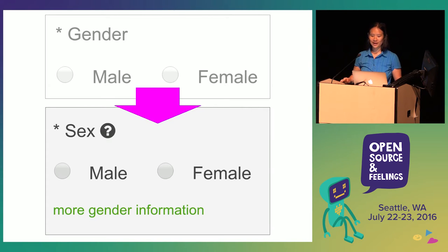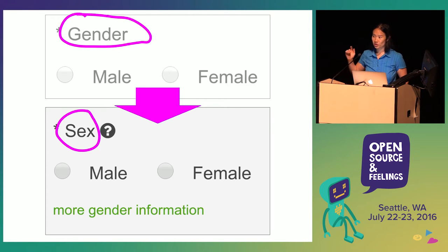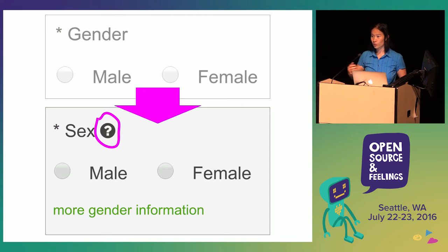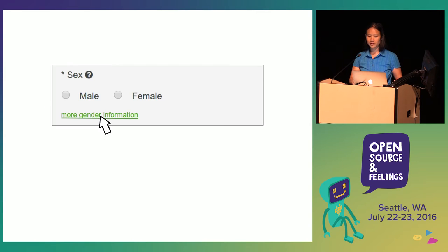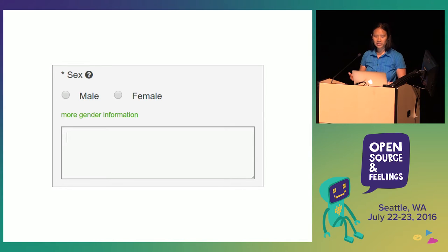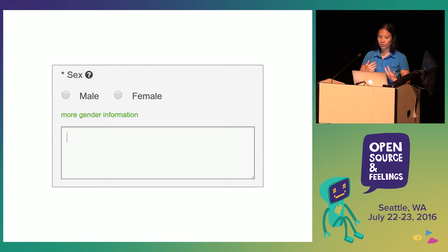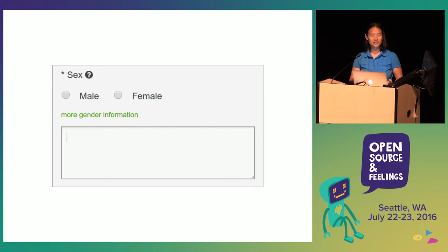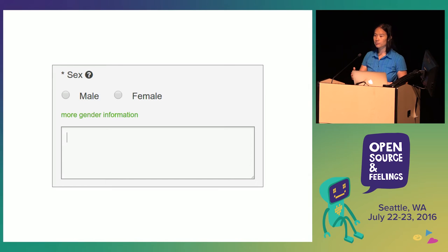So this is what we decided to do as a first pass that we could accomplish in a single-day hackathon. First, we change the label from 'gender' to 'sex' because it's a slightly more accurate description of what we're looking for. We add some hover helper text that explains what this required field is, and in that hover text we point users to a 'more gender information' link. If you click on it, it opens up a free-form text field. We talked about how to structure the gender data we'd be collecting and had different opinions. We argued until someone pointed out we had no idea who our trans patients were or what they actually needed. How could we decide how to structure this data if we didn't know what it could possibly include?